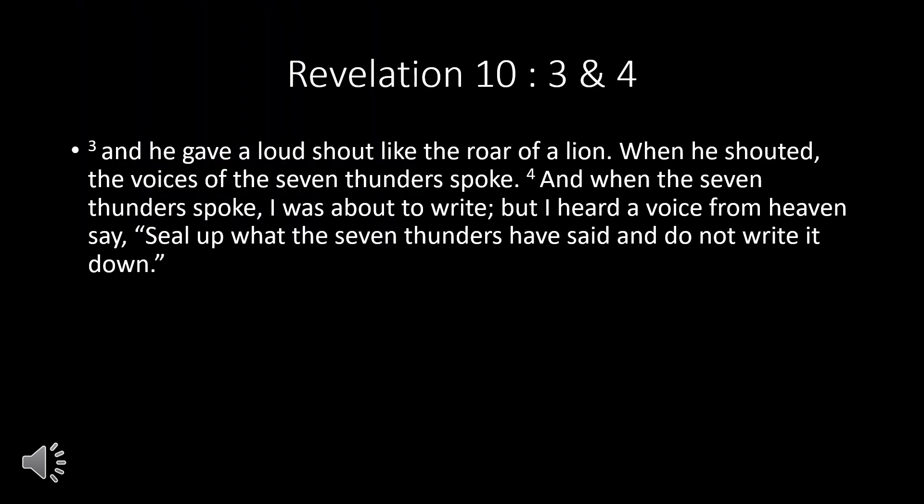The mighty angel takes an unusual posture, standing with his right foot on the sea and his left foot on the land. This is repeated three times, in verses 2, 5, and 8. The colossal dimensions of the angel correspond with the importance of his message — it's a message of universal importance. The angel has a little scroll in his hand. This is similar to, but slightly different from, the scroll in chapter 5 that appeared in God's hand. Both scrolls contain the purpose of God for the world, but the scroll of chapter 5 contained God's plan as carried out by the Lamb, whereas the little scroll contains God's plan carried out by John and by the church.